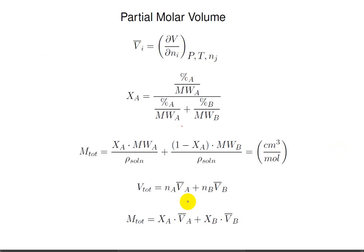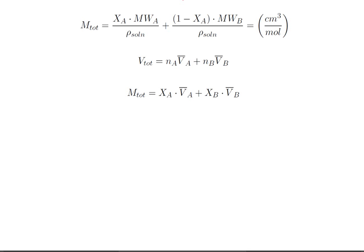At first blush, it would appear that V sub A should be equal to the molecular weight of A over rho of solution — you can see there's an x of A, x of A, and this could be V sub A. But that would not give partial molar volume as a function of the mole fraction, nor as a function of the number of moles of substance A. Instead, it would yield a function of the solution density, which is in fact the starting data set. In this equation, we have values for m-tote and x of A and x of B, but we still have two unknowns: the partial molar volume of A and the partial molar volume of B.